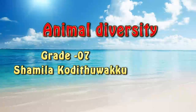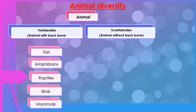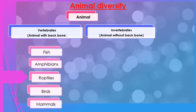Animal diversity. Animals can be divided into two parts: vertebrates and invertebrates. Vertebrates are animals with a backbone.